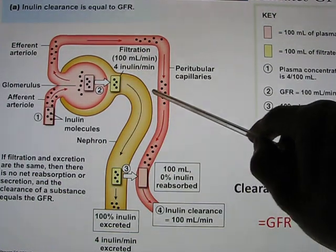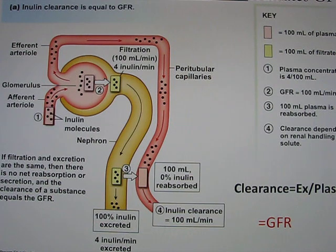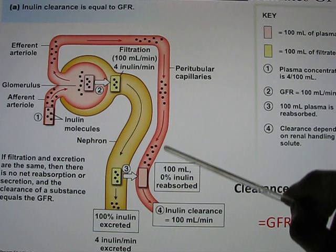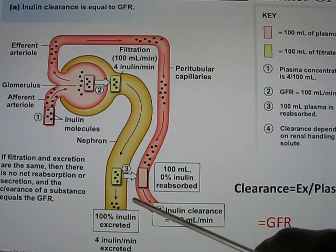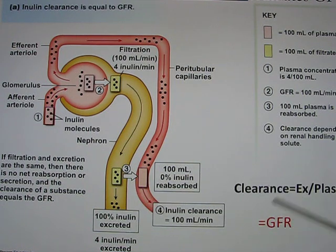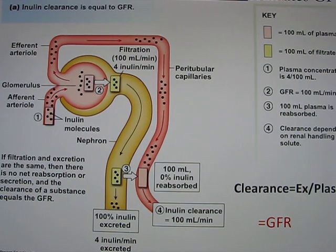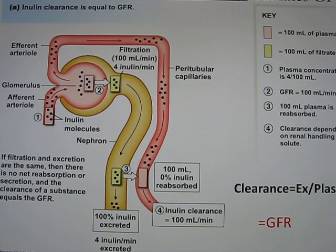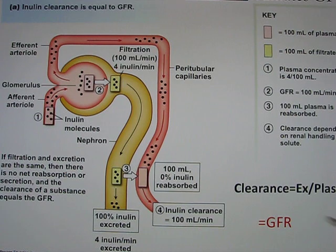The clearance equals GFR when you do the calculation — equal to the excretion rate divided by the plasma concentration. For a molecule that is neither reabsorbed nor secreted, clearance equals GFR. When we do renal calculations, we want to use inulin because this molecule helps us figure out what the GFR is. The clearance rate for inulin is 100 mL per minute, because every minute 100 mL of dirty plasma is sent in and fully cleaned.